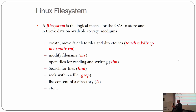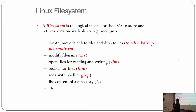A file system is the logical means for an OS to store and retrieve data on available storage mediums. In other words, a file system is the logical layer between you and the raw information on the disk.